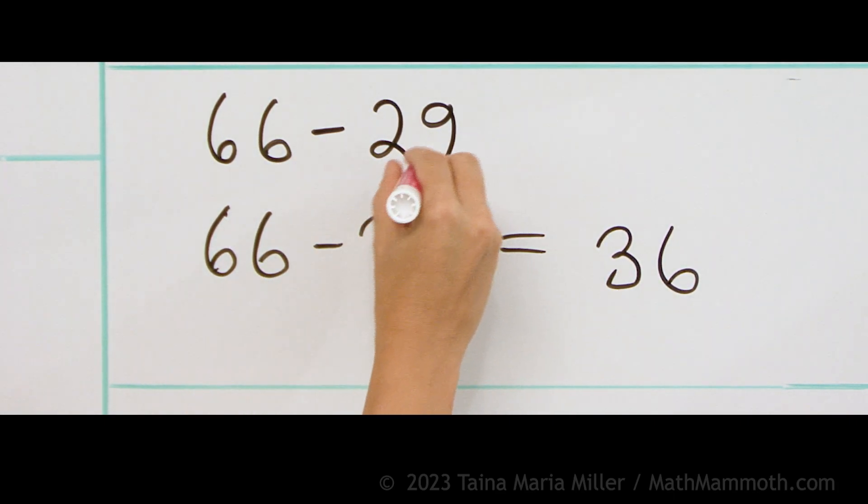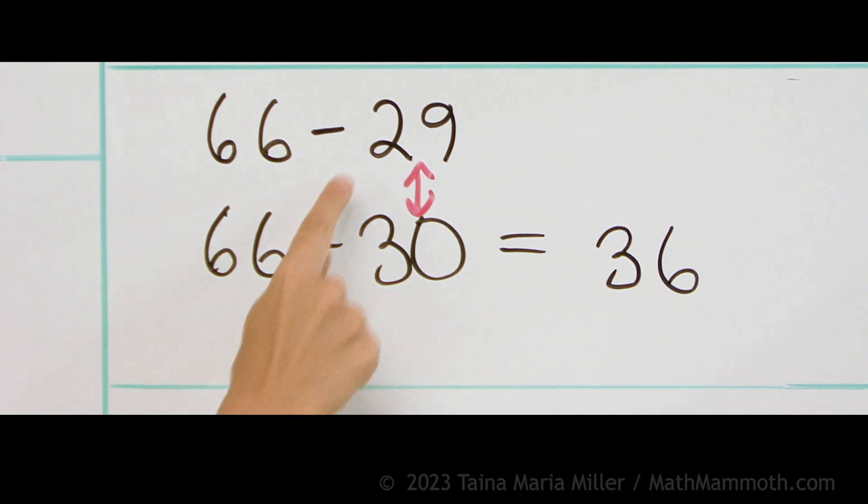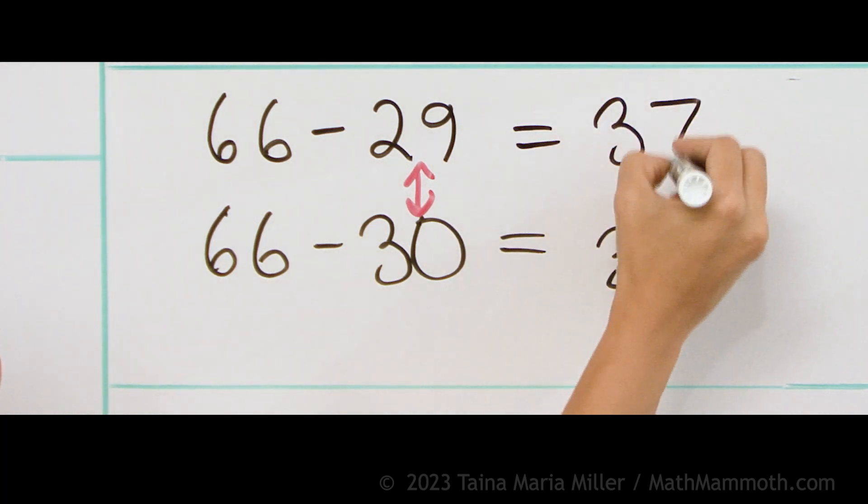And now think here when I subtracted 30 and I should have subtracted 29. So I subtracted one too much, right? And since I took away one too much, I need to add one to this to get the right answer. 37.